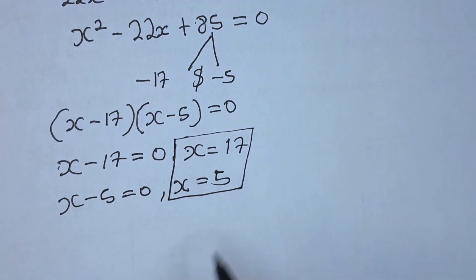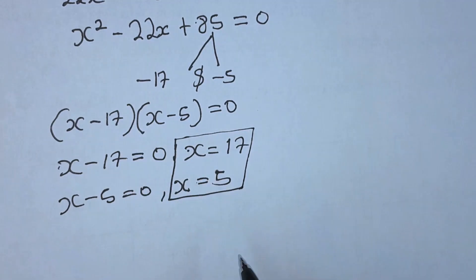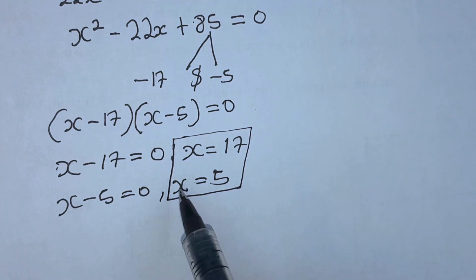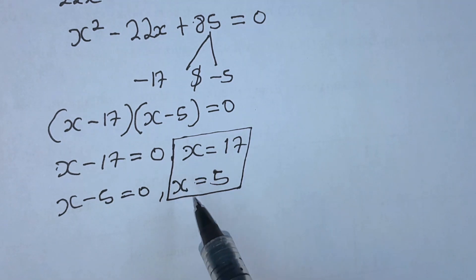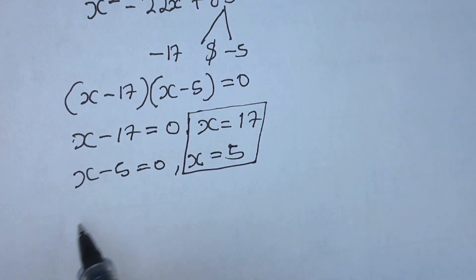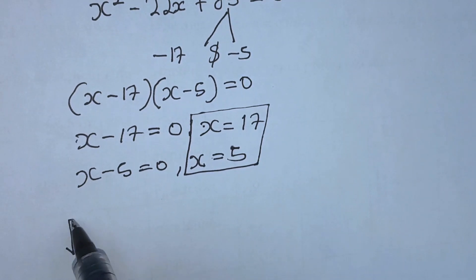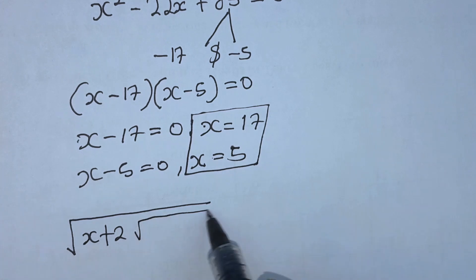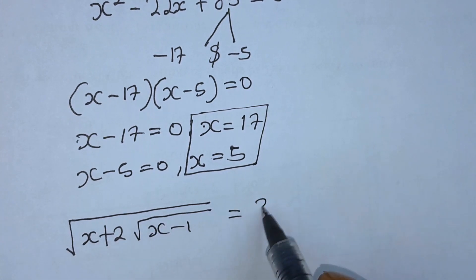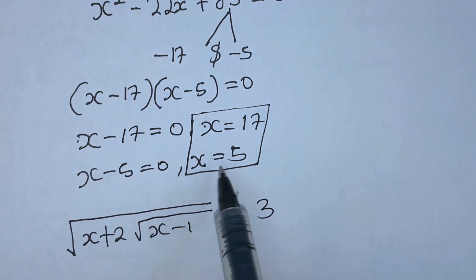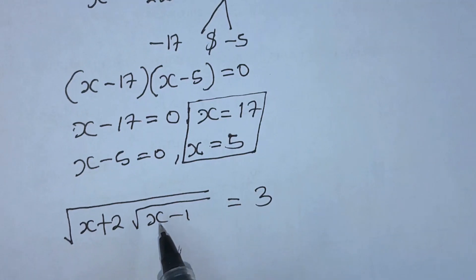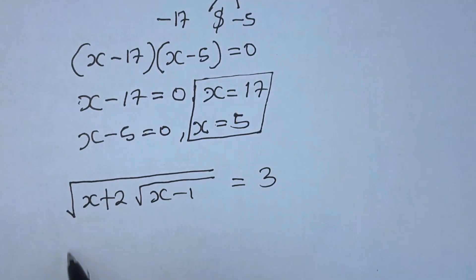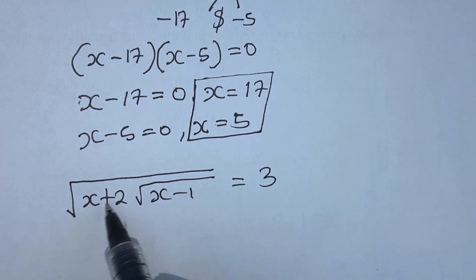We can check by substituting the value of x into the original equation. Let's pick any one of the values of x to check whether we are correct. The original equation is square root of x plus 2 times square root of x minus 1 equals 3. Let's pick x equals 5 and check. Substituting the value of x here.